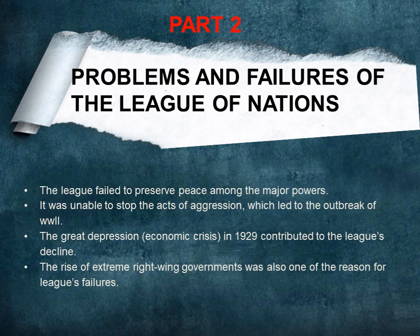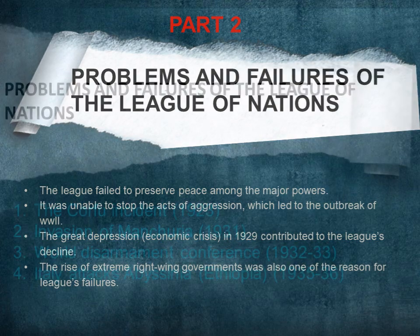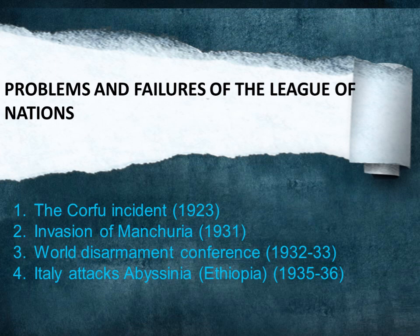The decisions taken by the League against aggressive nations were outrightly rejected by them. The League was unable to impose effective sanctions. The key events were: the Corfu incident in 1923, the invasion of Manchuria in 1931, the World Disarmament Conference in 1932-33, and Italy's attack on Abyssinia in 1935-36. We will study what actually happened and what actions were taken by aggressive nations toward smaller and weaker nations.